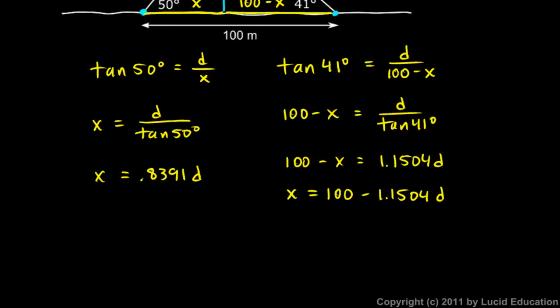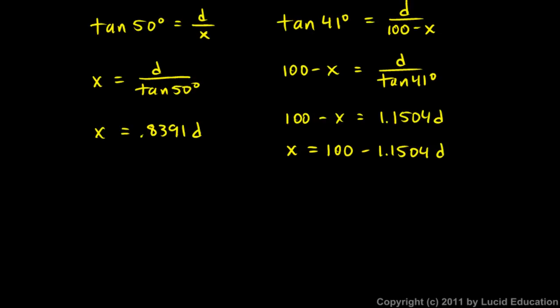From here it's just a little bit of algebra. x is equal to this, and x is equal to that. So this must equal that. So let's write .8391D equals 100 minus 1.1504D. And I can solve this for D. D is what I'm trying to find. So I'll add 1.1504D to each side.